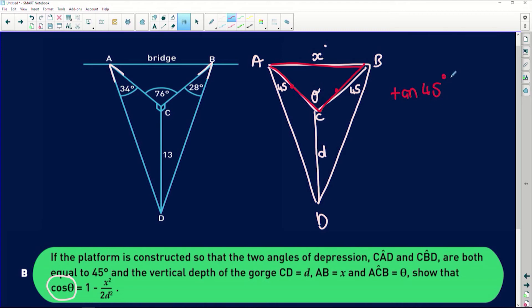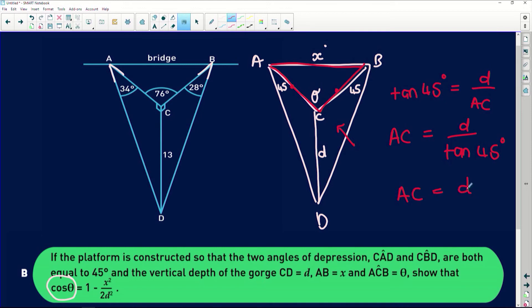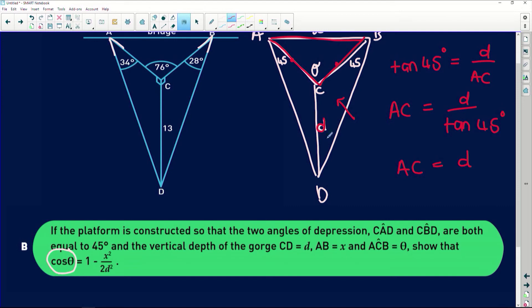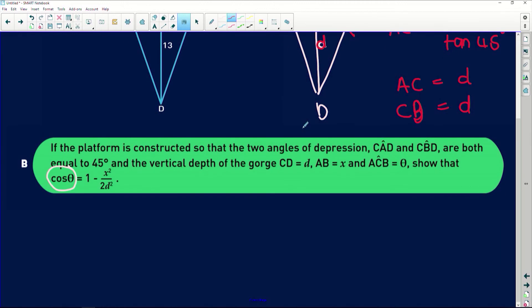So tan of 45 in this triangle here is equal to the opposite over the adjacent, which means that AC is equal to d over tan of 45. Now guys, tan of 45, special angle, is equal to 1, so AC is equal to d. If you look here, because it's the same value d here and 45 there, that means that AC and CB are the same distance because we have identical triangles.